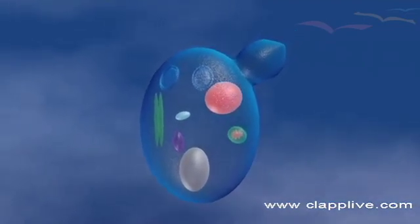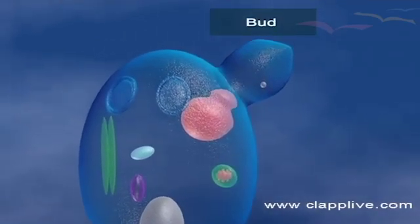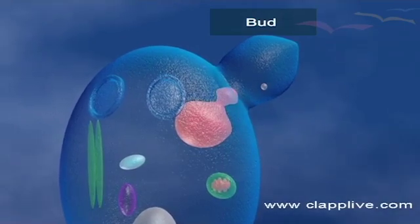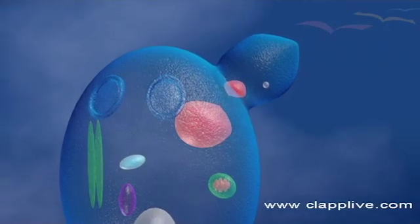This is followed by the division of the nucleus. The nucleus of the parent cell divides into two and one of the daughter nuclei migrates into the bud.